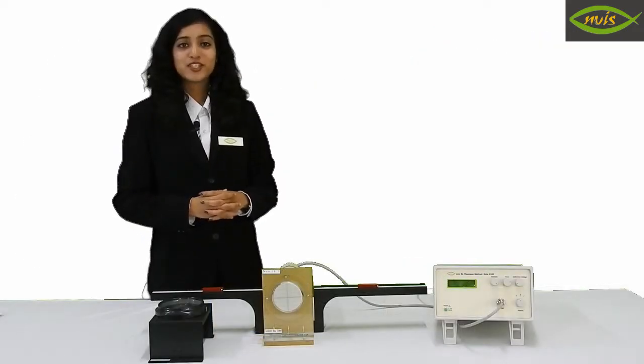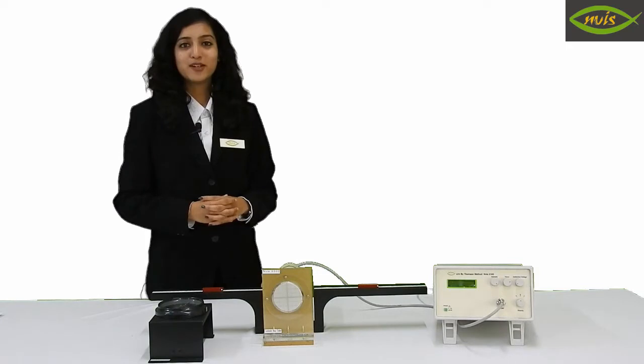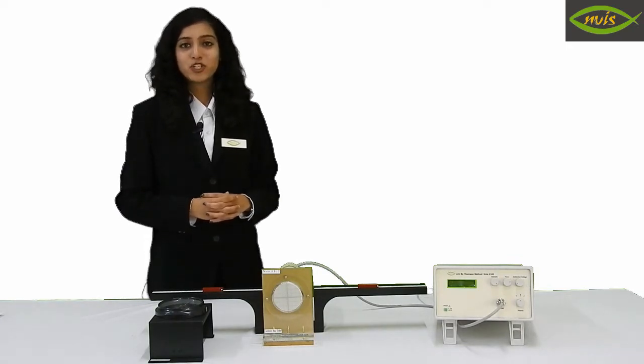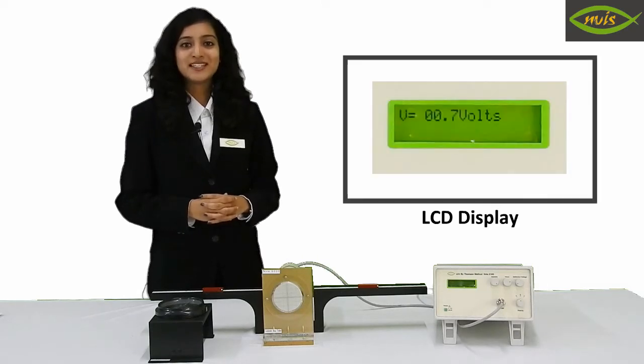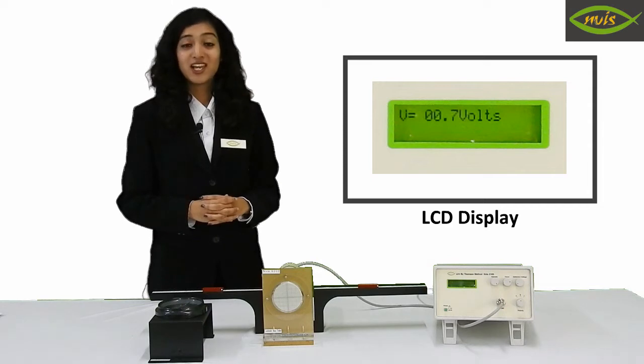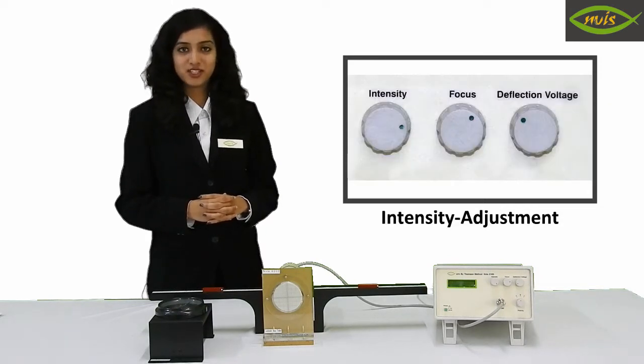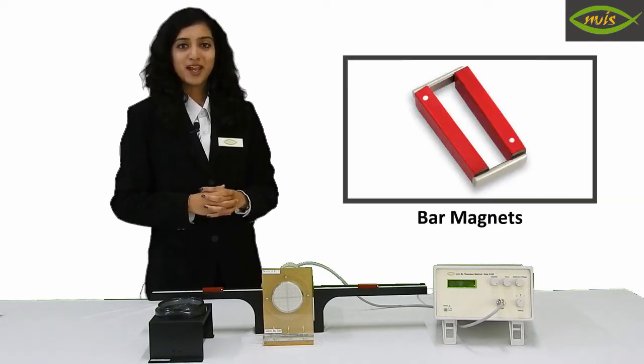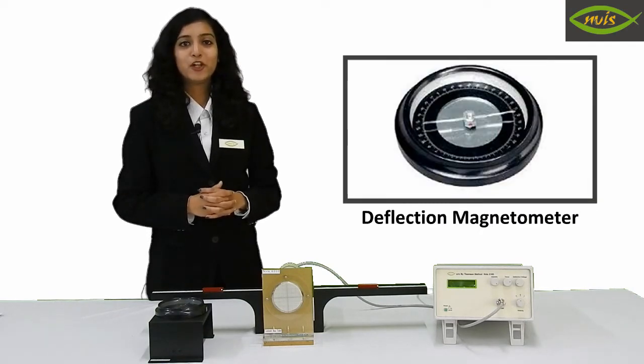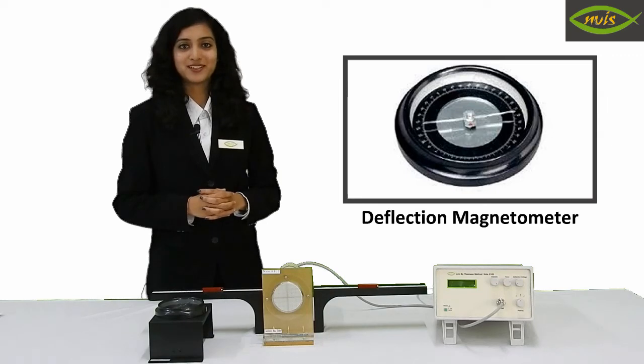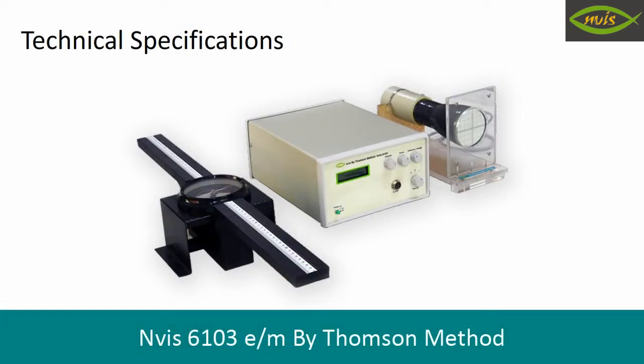Now let me tell you some of the unique features of Envis 6103. It is a microcontroller based instrument which is provided with an LCD display for displaying the deflection voltage along with intensity adjustment and focus. A pair of bar magnets is also provided along with the deflection magnetometer.